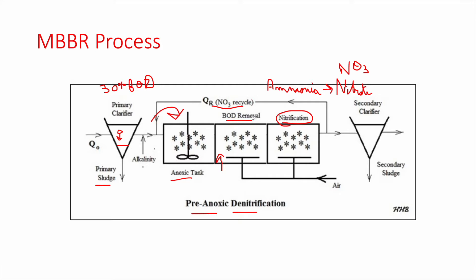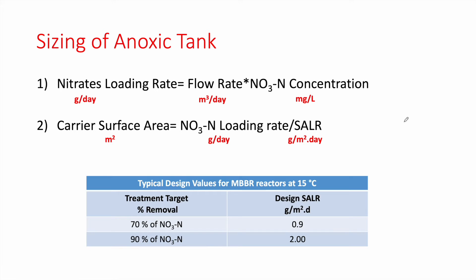To summarize: first the primary clarifier provides a small BOD reduction. Then the anoxic tank receives both the carbon source and recycled nitrates from the nitrification tank, achieving nitrate removal. Next, the BOD removal tank provides high BOD reduction. Then the nitrification tank forms nitrates under aerobic conditions. Finally, the secondary clarifier settles secondary sludge and clarified water can undergo tertiary treatment, usually disinfection.